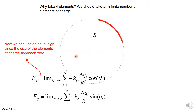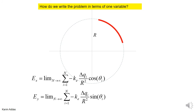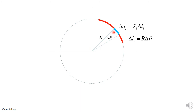If you want to make the problem exact, we have to make the number of elements go to infinity. So we sum from 1 to N and let N go to infinity — this gives us the correct exact formula because then we are justified in using the equation for a point charge. To convert this limit of sums into an integral, we need to express everything in terms of one variable. We have delta Q, theta, and N here, so let's write delta Q in terms of delta theta.